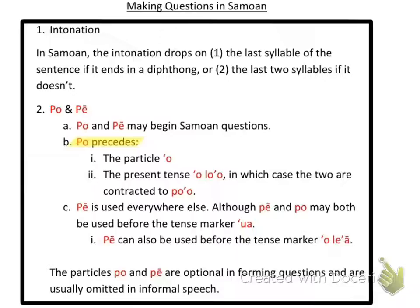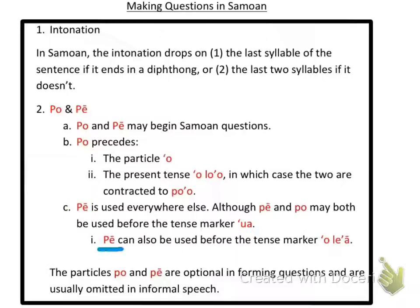Pe is normally used everywhere else. Both pe and po may be used before the tense marker 'ua'. So po can go before the particle 'o' and before 'ua', but other than that, you use pe. Pe can also be used before the tense marker 'olea' — that's another exception. So even though 'olea' has the particle 'o' in it, you can still use pe before it.